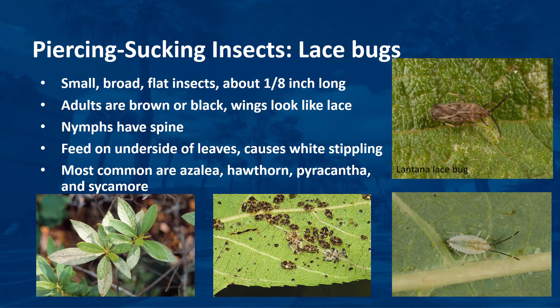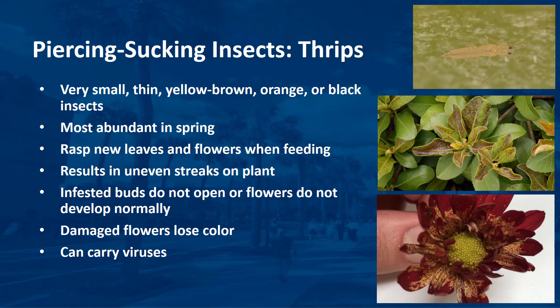Lace bugs are small, broad, flat insects about 1/8 of an inch long. Adult bodies are brown or black. Their wings look like lace under a hand lens or microscope. Nymphs have spines. Lace bugs feed on the underside of leaves. Damage appears as white stippling on the upper surfaces of leaves. Lace bugs leave brown spots of excrement and discarded skins on the undersides of leaves. The fecal spots cover each egg a lace bug produces. The most common lace bugs are the azalea, hawthorn, pyracantha, and sycamore, and their names are derived from their host plants.